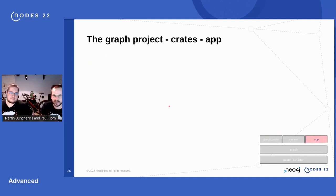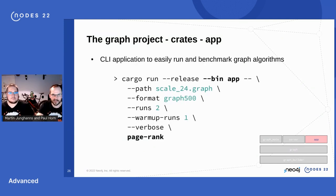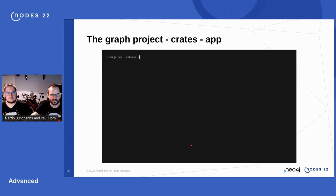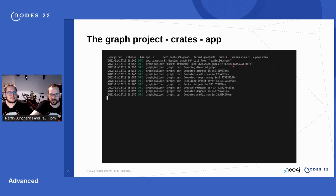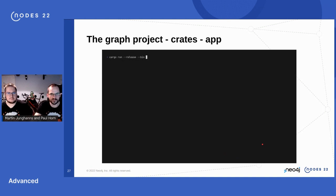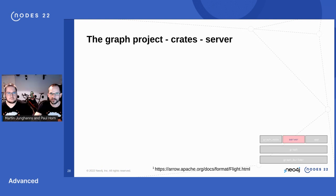The app crate is a CLI application we wrote mainly to easily run benchmarks on a server. You run it with Cargo with benchmark-specific arguments — where the graph is located, how many warm-up runs, and which algorithm. For example, running on Scale 24 — which has 270 million relationships — PageRank completes with an average runtime of about 2.6 seconds.